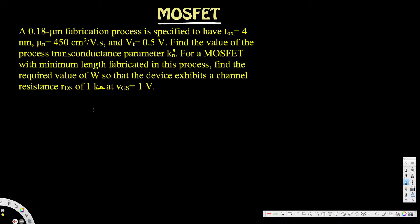Let's look at this problem. The 0.18 micrometer fabrication process is specified to have tox (oxide thickness) equal to 4 nanometers, μn equal to 450 centimeter squared per volt-second, and V_threshold equal to 0.5 volts. Find the value of the process transconductance parameter kn prime. For a MOSFET with minimum length fabricated in this process, find the required value of W so that the device exhibits a channel resistance RDS of 1 kilohm at VGS equal to 1 volt.